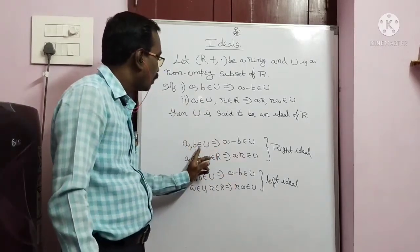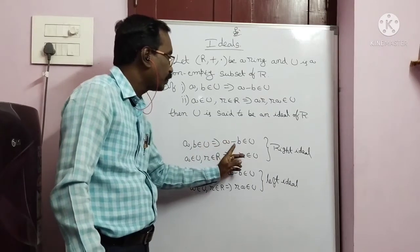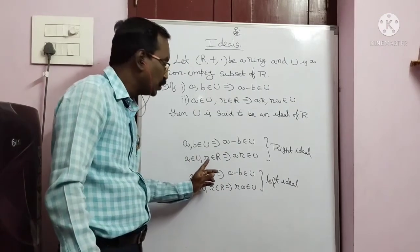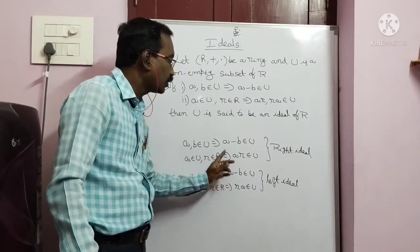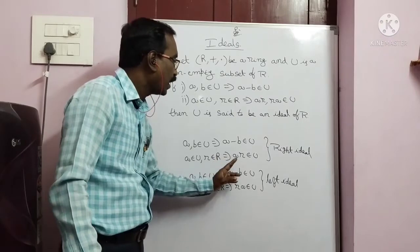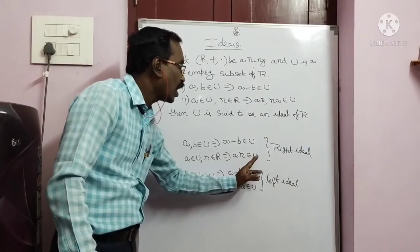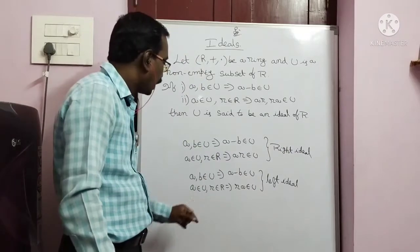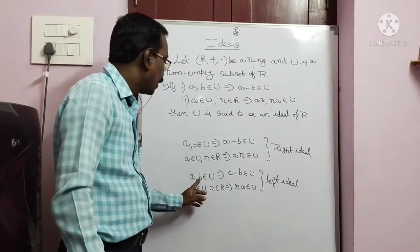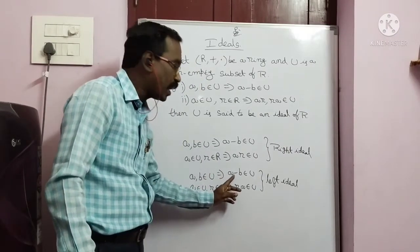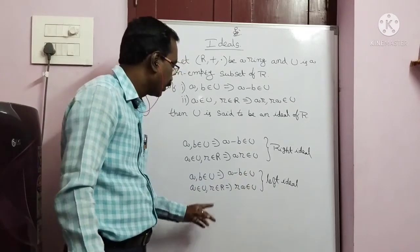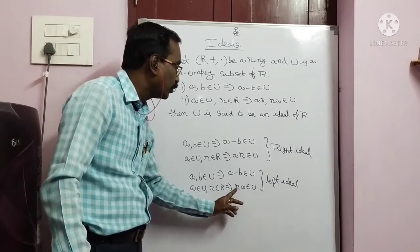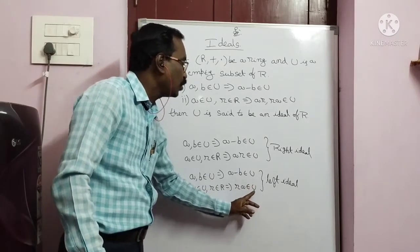A, B belongs to U, A minus B belongs to U. Next, A belongs to U, small r belongs to capital R, A, B belongs to U. Next, A, B belongs to U. Next, A belongs to U. Next, A belongs to U.